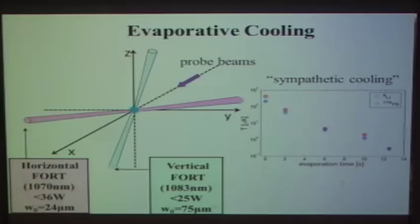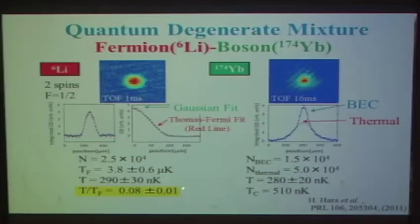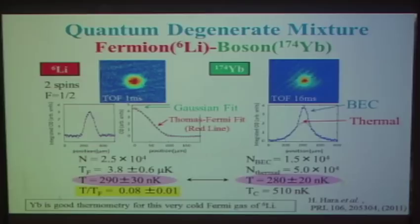This is the result for the Bose-Fermi mixture. In this case, Lithium-6 has two spin components while Ytterbium-174 is a spinless boson. The Lithium temperature is very low and deep in the Fermi degenerate regime. The temperatures of Lithium and Ytterbium are almost the same; therefore, the Ytterbium atoms offer good thermometry for this very cold Fermi gas of Lithium-6. This is another advantage of this system.